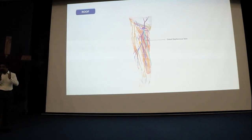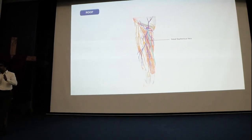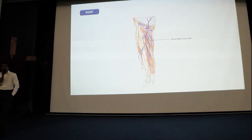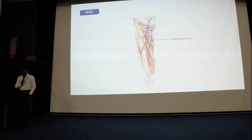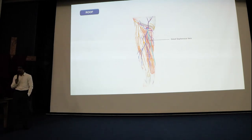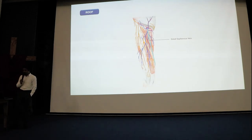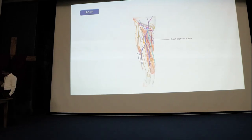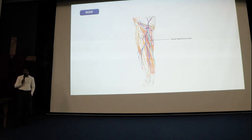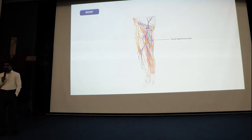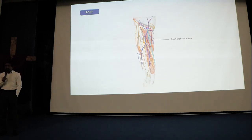So the roof is formed by skin, superficial fascia with its cutaneous vessels and cutaneous nerves, and deep fascia. The lateral femoral cutaneous nerve is also present in the superficial fascia, but we will study it in detail when we discuss the femoral sheath.